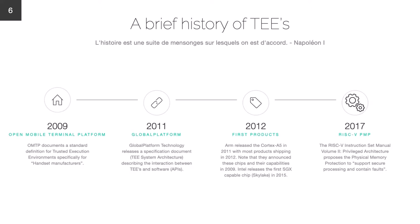This is a brief history of trusted execution environments. Many technologies existed before that accomplished similar things, but the Open Mobile Terminal Platform was one of the first groups to standardize what a TEE should be — not surprisingly centered around handset manufacturers for cell phones. The Global Platform Group then extended that standard, and it wasn't until 2012 that products with TEEs appeared on the market. Notably, in 2017 RISC-V ratified the PMP part of its spec, making it a relatively new addition to the TEE ecosystem.